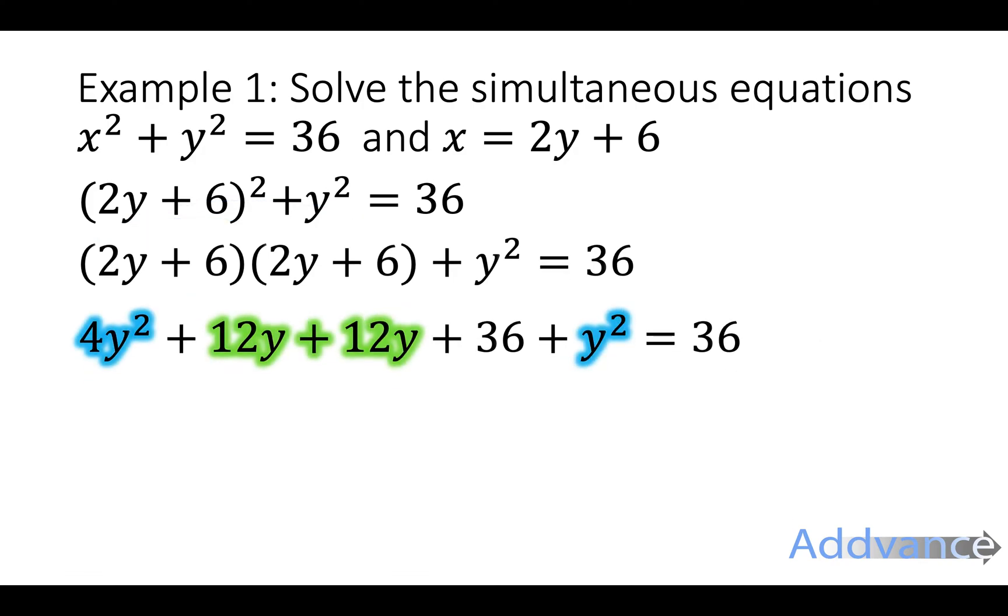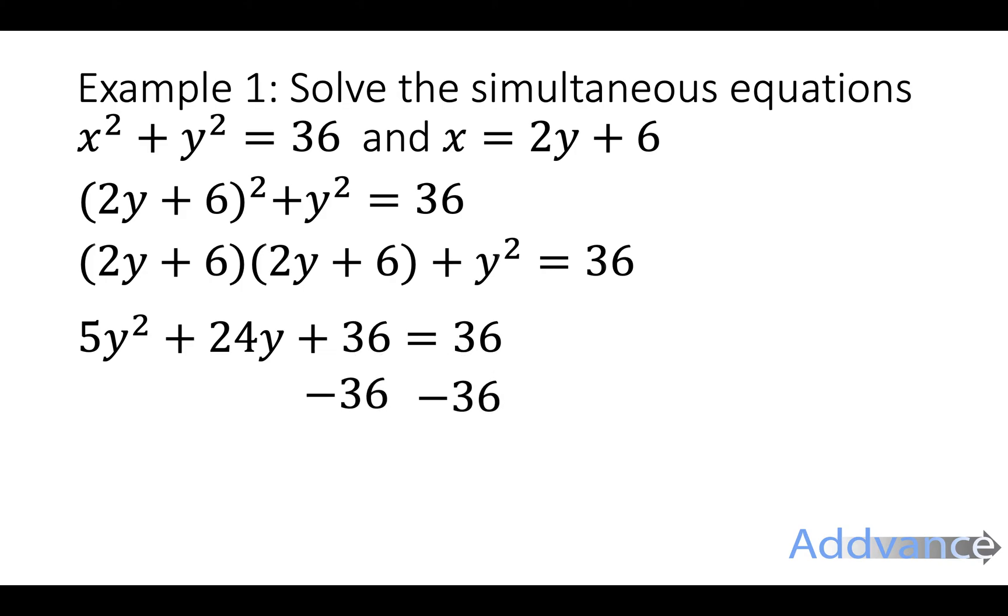And so we're going to simplify the 4y squared and the y squared come together. The 12y and the 12y come together. And we get 5y squared plus 24y plus 36 equals 36. Which is a quadratic equation which we can solve. So we start by taking 36 off both sides. And that simplifies it straight away to 5y squared plus 24y equals 0.